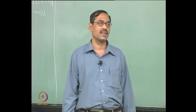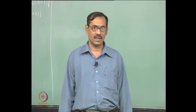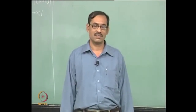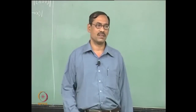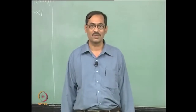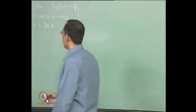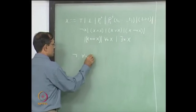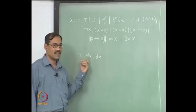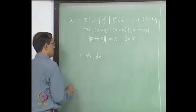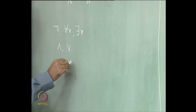Some more parentheses can be reduced by laying down the precedence rules. The same precedence rules as in propositional logic: 'not' has the highest precedence, then 'and' and 'or' have the next precedence, and 'implies' and 'biconditional' have the lowest precedence. Now we also have quantifiers. We will put quantifiers at the level of 'not' — they look like unary operators, so we put them there. So 'not' and the quantifiers 'for each x' and 'there exists x' will have the highest precedence, followed by 'and' and 'or', and the lowest will be 'implies' and 'biconditional'.